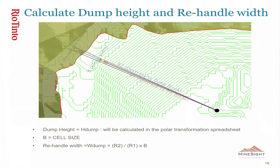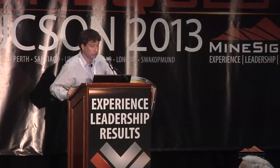Here is how we calculate the dump height and re-handle width. The dump height variable, defined as hdump, will be calculated in the polar transformation spreadsheet. B is the cell size or block size in the model. The re-handle width, wdump, is calculated by a simple geometric calculation: radius two divided by radius one, times the block size.